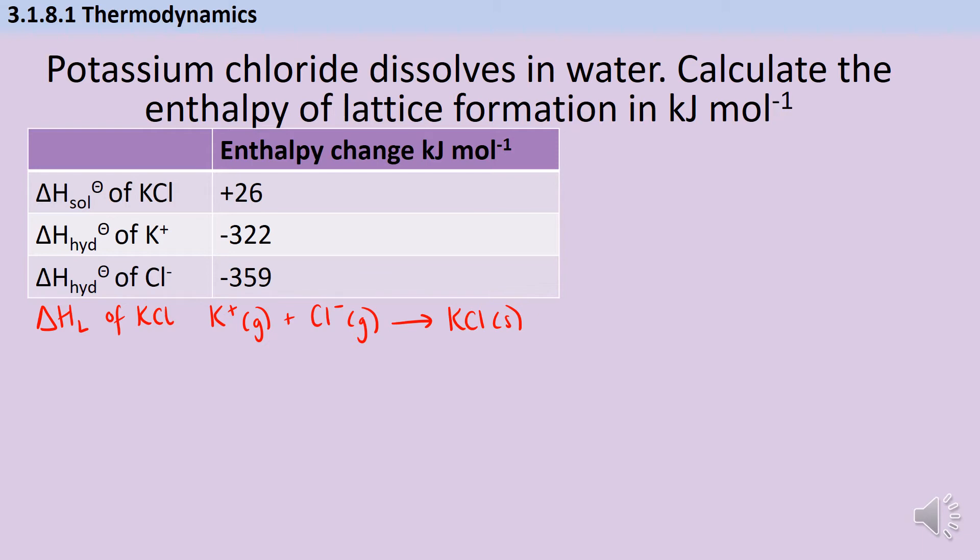When I have a question like this, the first thing I'm going to do is write a chemical equation for each one of these enthalpies. Doing that is going to make it a lot easier for me to assemble my cycle and ensure that when I do, all of my arrows are going in the right direction because I've already put them in these equations.